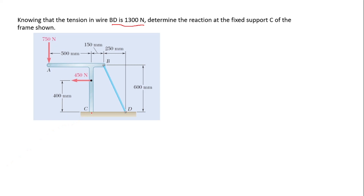With a fixed support at C, it means that C will have a vertical force and a horizontal force with a moment around it. So for C we'll get a vertical force, a horizontal force, and a moment. These are what we are looking for — the vertical force, the horizontal force, the resultant of both forces, and the moment.